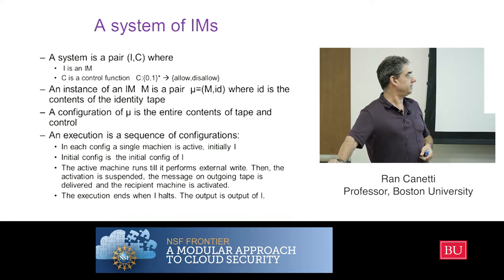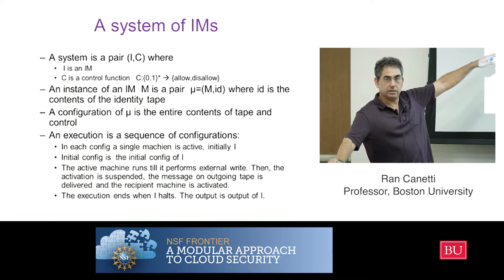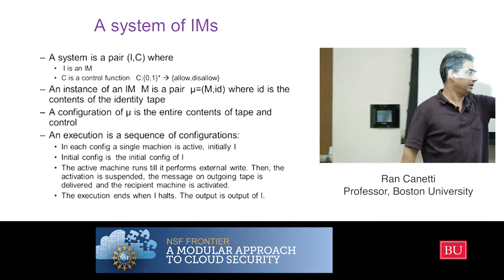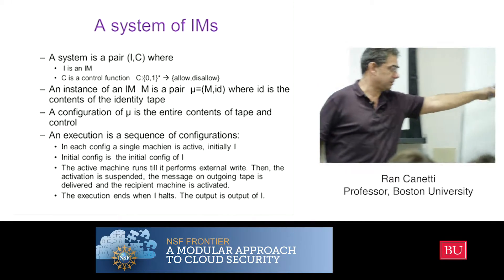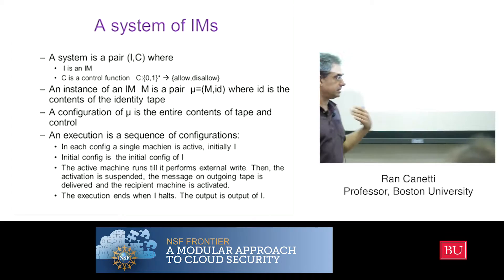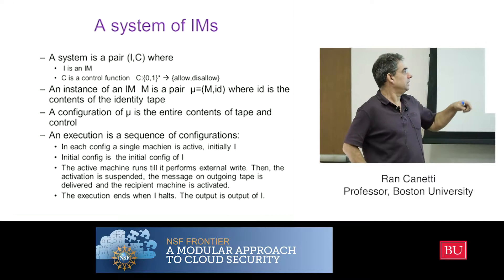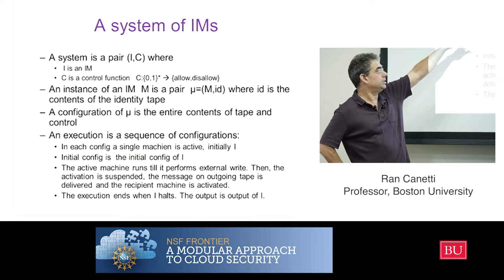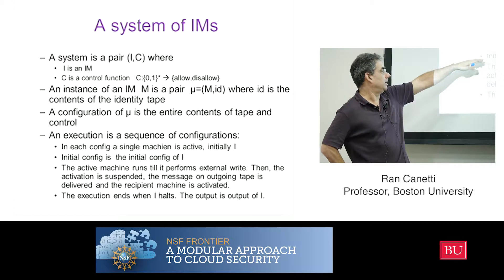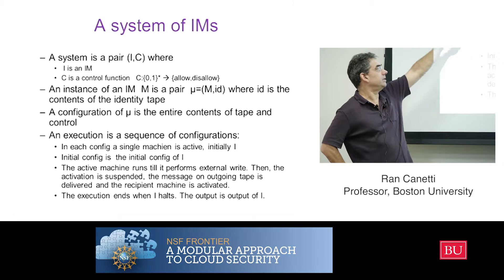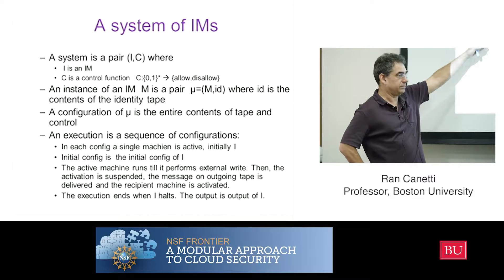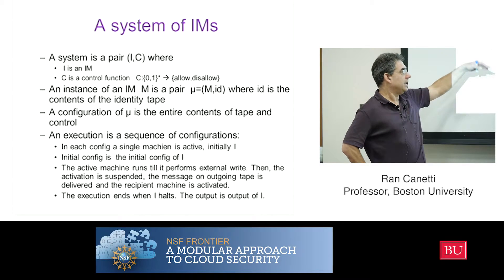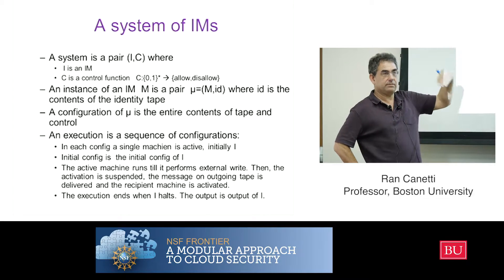As usual, there's an execution of some computing device. And in each configuration, there is a single machine that is active — that means its active bit is one, and all the other ones' active bits are zero. This is the one that's actually doing the computation. Initially, the initial machine I is the initial configuration of the whole thing, and then the initial machine is active and running.